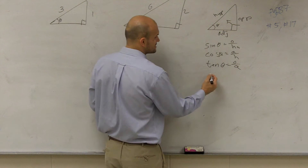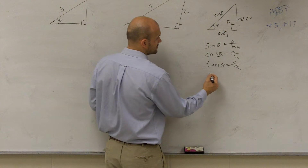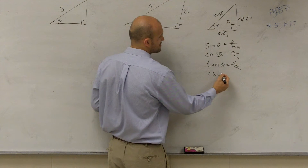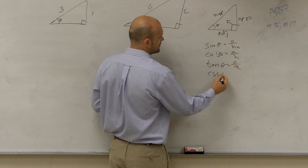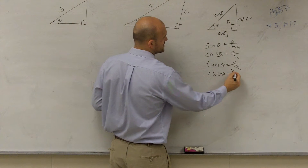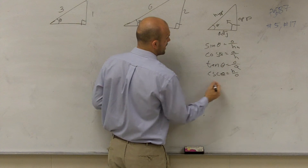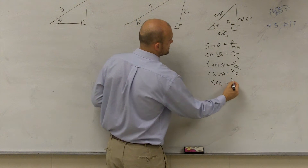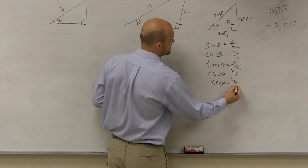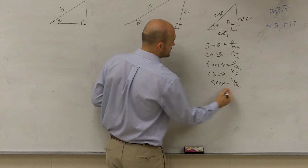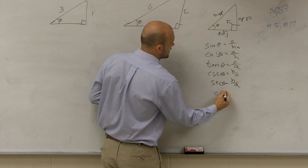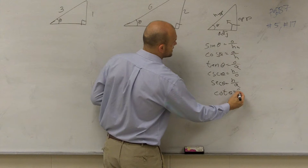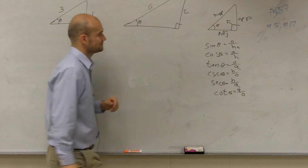Then they asked for the actual six trigonometric functions. So cosecant — remember — is going to be the reciprocal. Cosecant of theta is hypotenuse over opposite. Secant of theta is hypotenuse over adjacent. And cotangent of theta is adjacent over opposite.